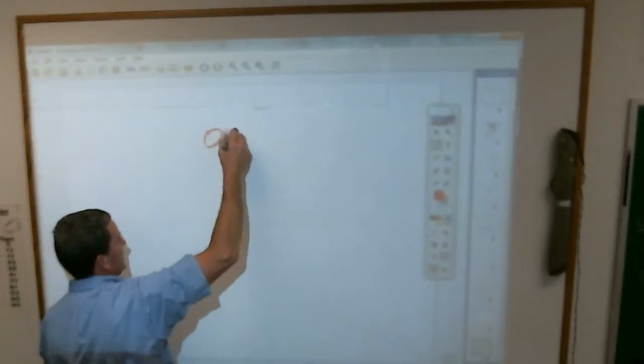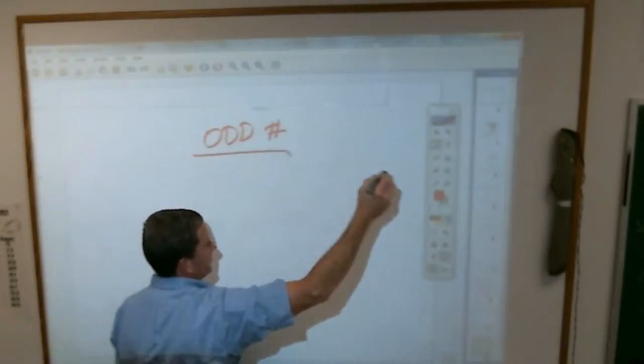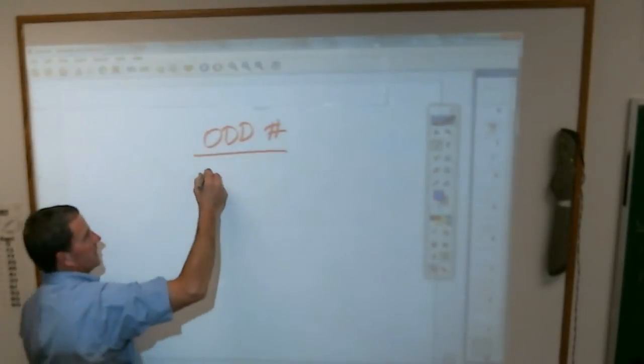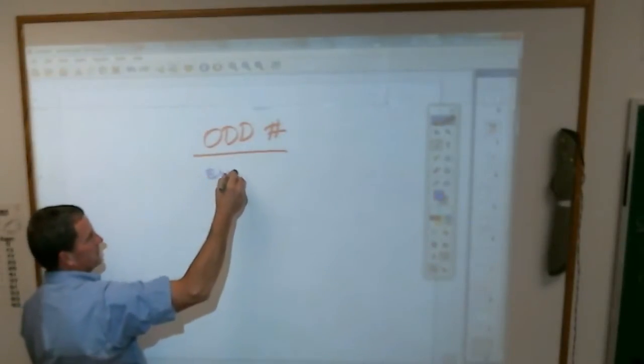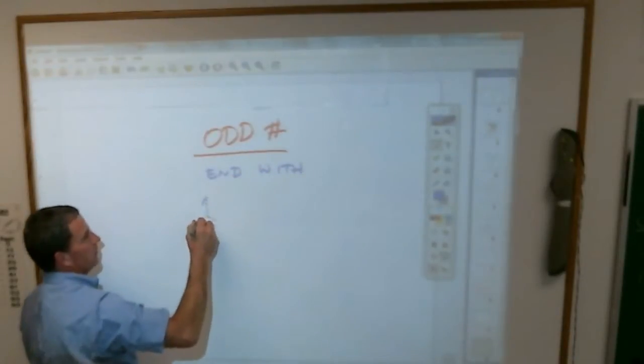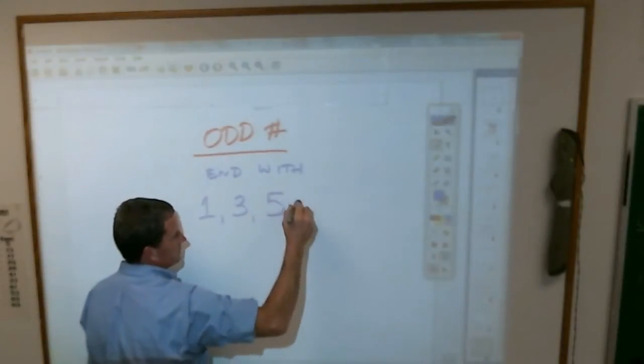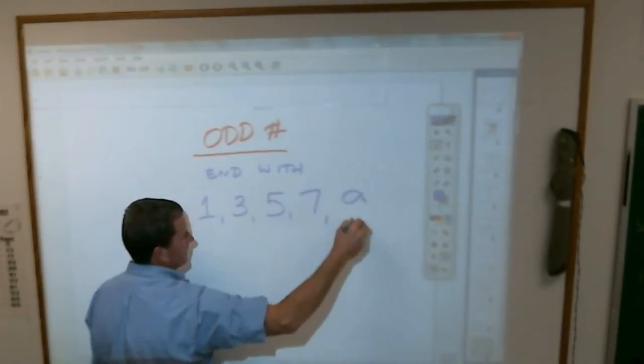This, I will say, is something 5th graders have struggled with before. Not odd numbers, per se. Because odd numbers end with what digits? 1s, 3s, 5s, 7s, and 9s.